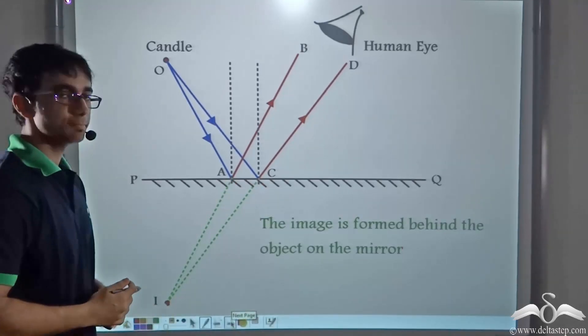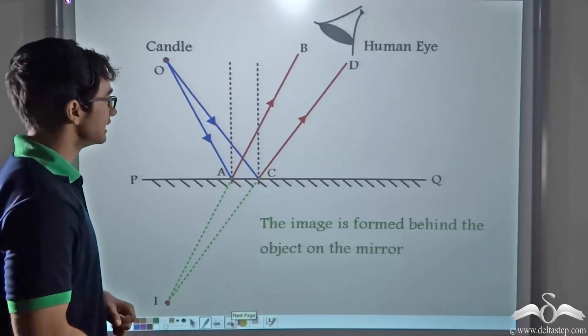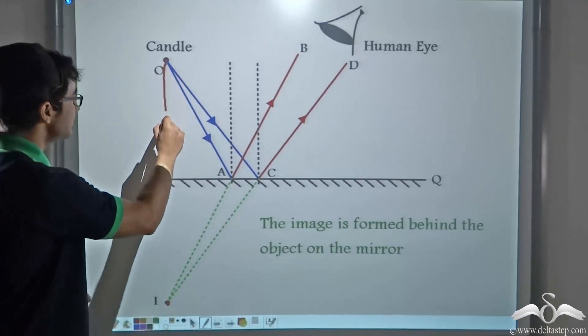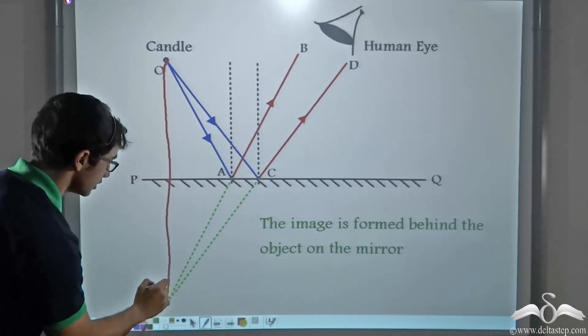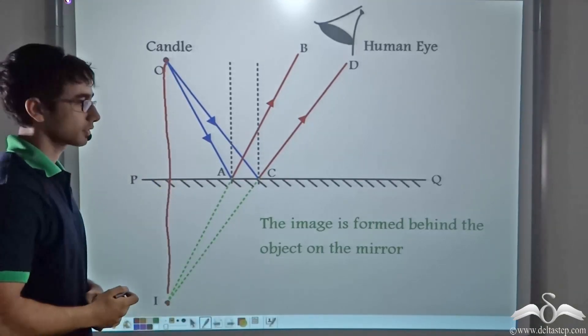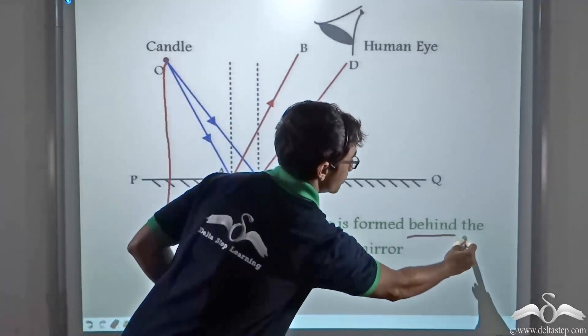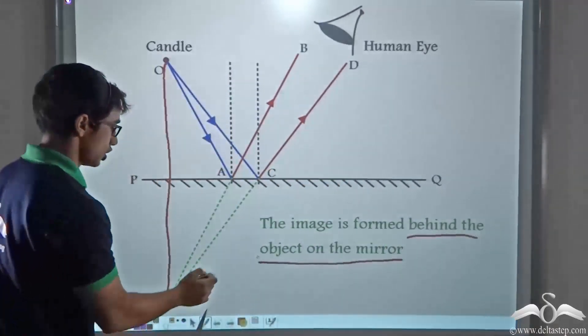And as you can see, the image is formed behind the object on the mirror.